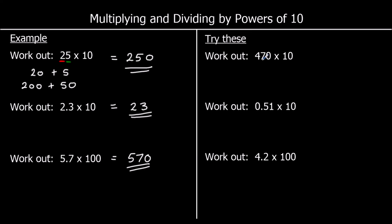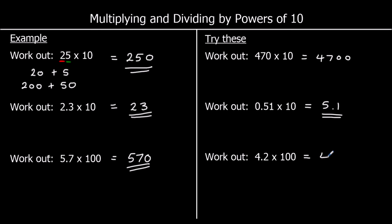470 multiplied by 10: hundreds become thousands and tens become hundreds, giving 4700. 0.51 multiplied by 10: 0.5 becomes 5 and 0.01 becomes 0.1, giving 5.1. 4.2 times 100 — multiplying by 10 twice: the 4 becomes 400 and the 0.2 becomes 20, so the answer is 420.